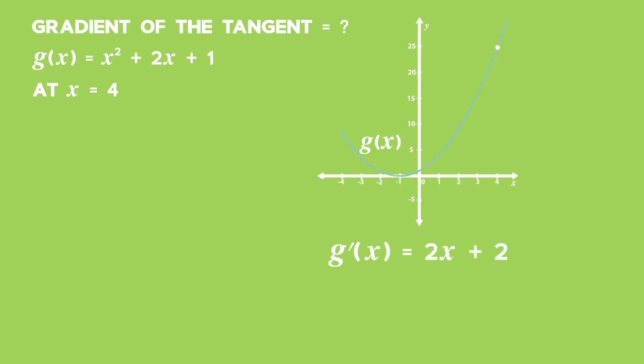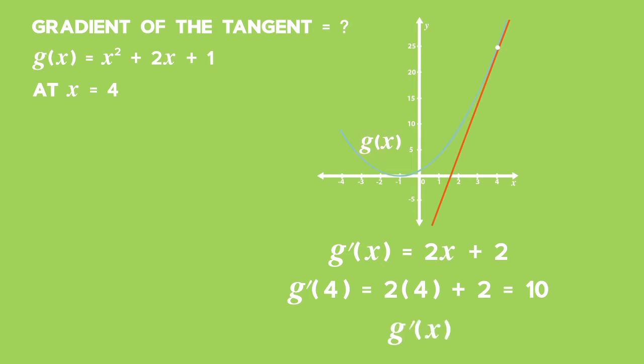We want to know the specific value of the gradient at x = 4, so we must substitute x = 4 into the derivative. g′(4) = 2 × 4 + 2 = 10. The gradient of the tangent and the curve are equal at the point of contact. Hence the gradient of the tangent to g(x) at x = 4 is 10.